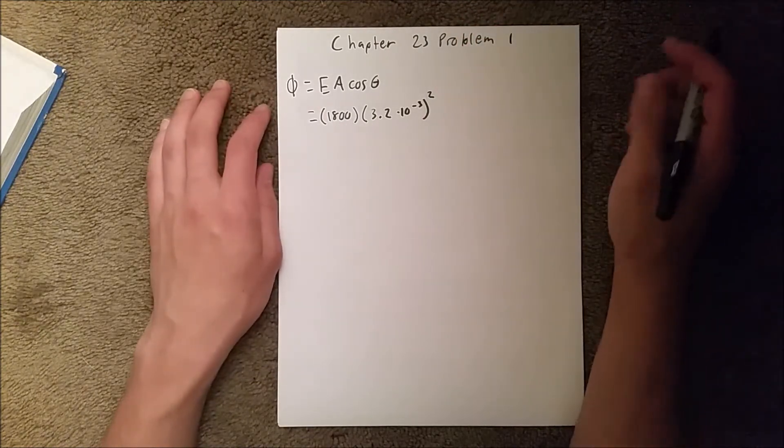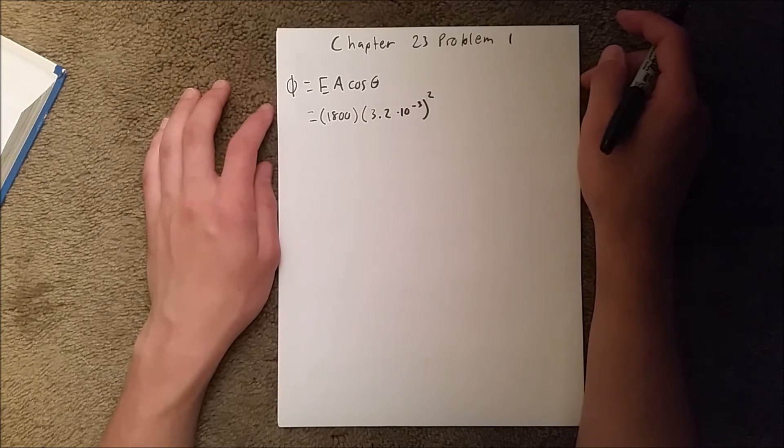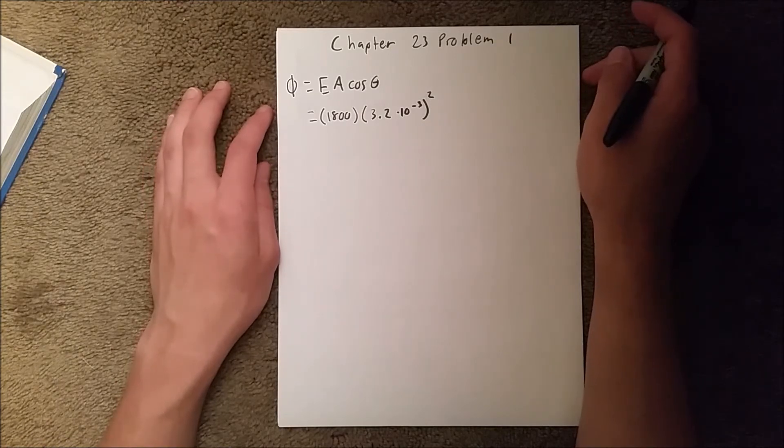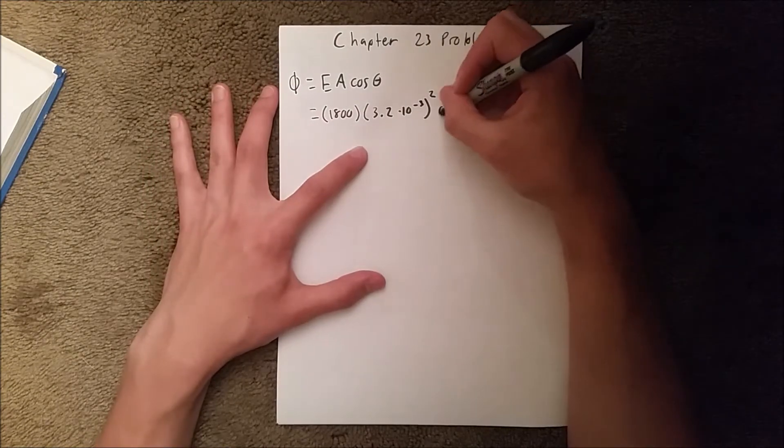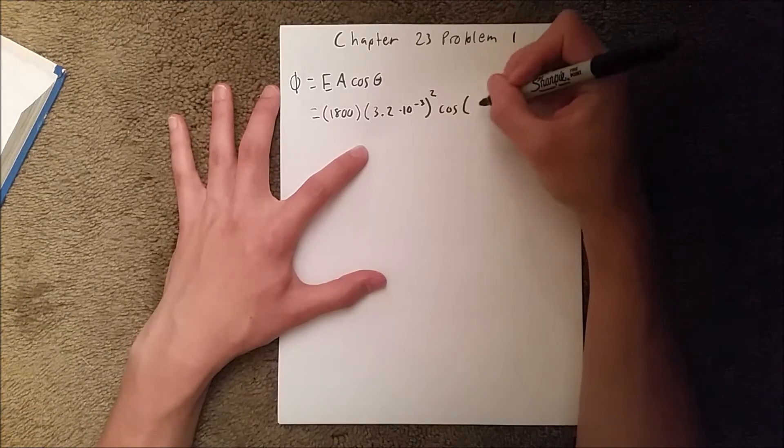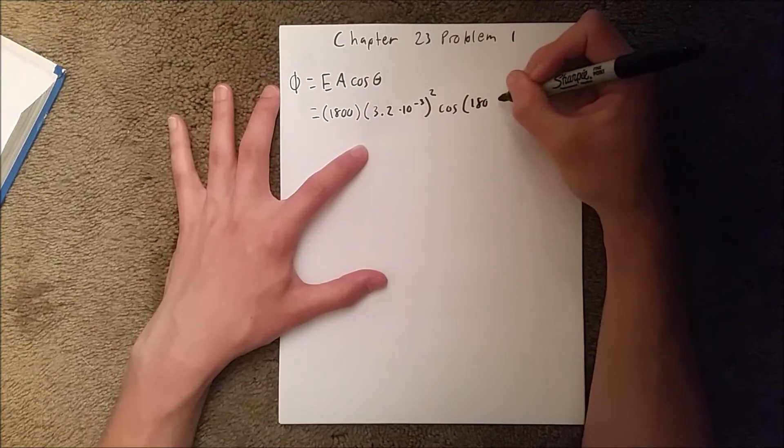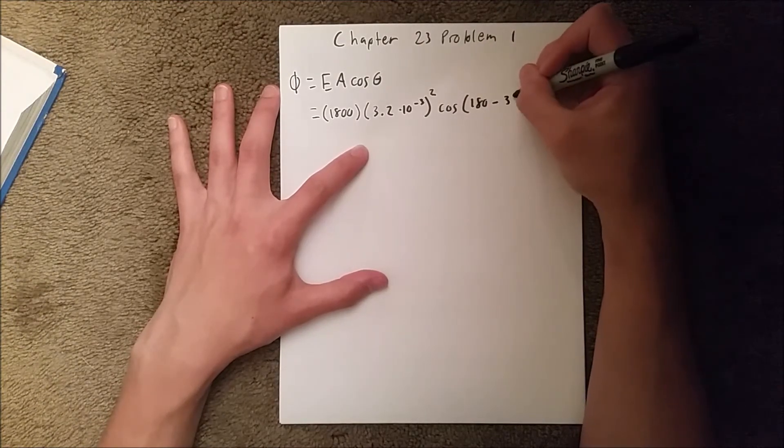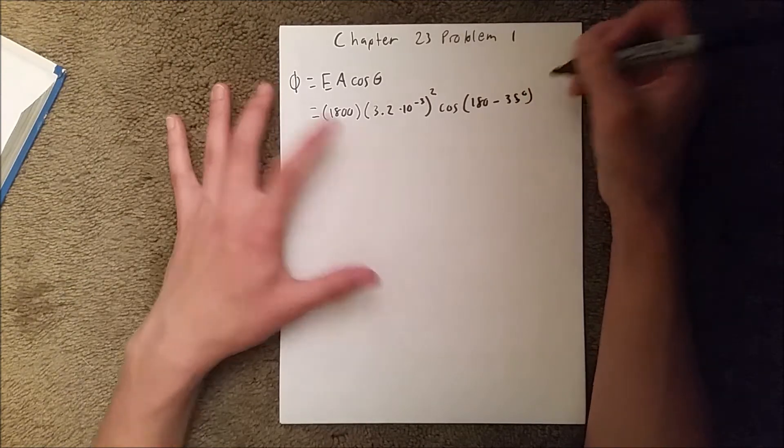To make it the area of the square, then that's going to be times our angle, cosine of - you need to be careful here, it is 180 minus 35 degrees. You don't just plug in 35 degrees.